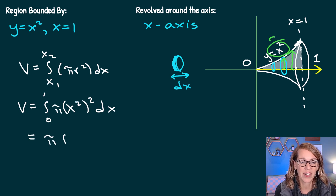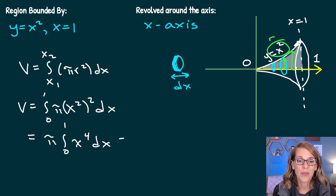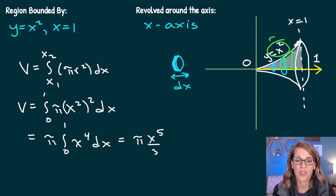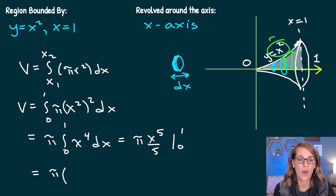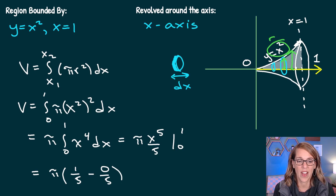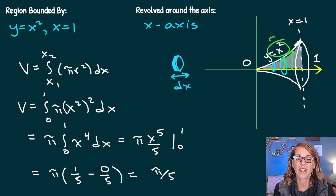Bringing pi out in front, I have pi times the integral from zero to one of x to the fourth dx. Using the power rule to integrate, I get pi times x to the fifth over five, evaluated from zero to one. Evaluating, that's pi times one to the fifth over five minus zero to the fifth over five, giving a volume of pi fifths.